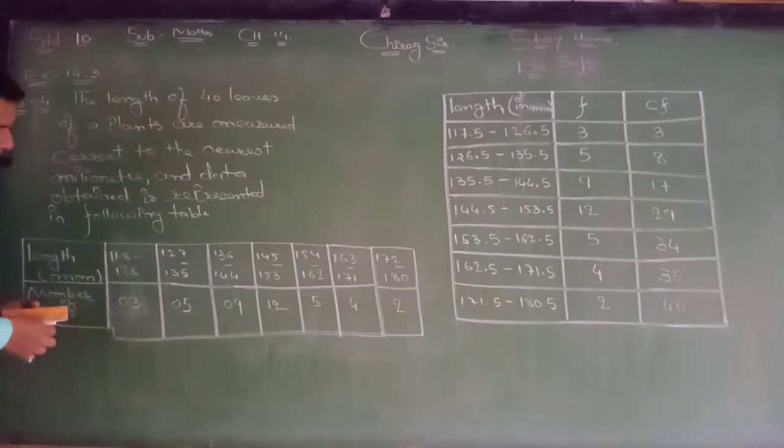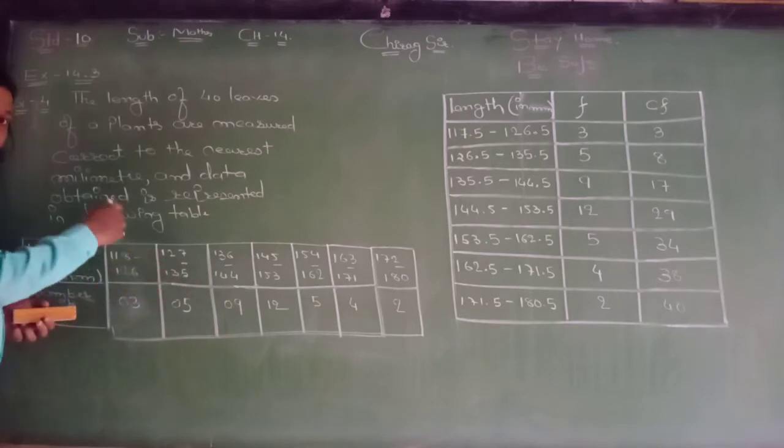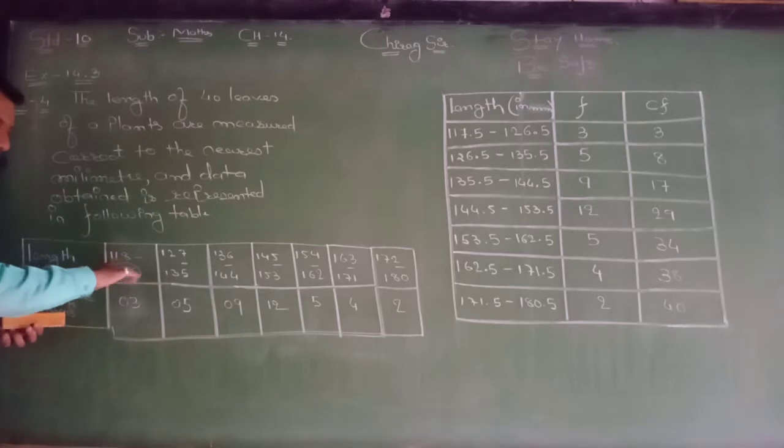Dear students, please see here. This class length should be continuous. This is 118 to 126, the next class should start from 126. In short, here the upper limit should be the lower limit of the next class.